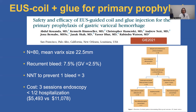Our group has used coil followed by glue for primary prophylaxis of gastric variceal bleeding. In a study of 80 patients with a mean varix size of 22 mm, the recurrent bleeding rate was 7.5%, and the gastric variceal re-bleed rate was only 2.5%. The number needed to treat to prevent one bleed was 3. Importantly, the cost was significantly lower if patients underwent prophylactic treatment — three sessions of endoscopy was one half the cost of hospitalization if patients bled.